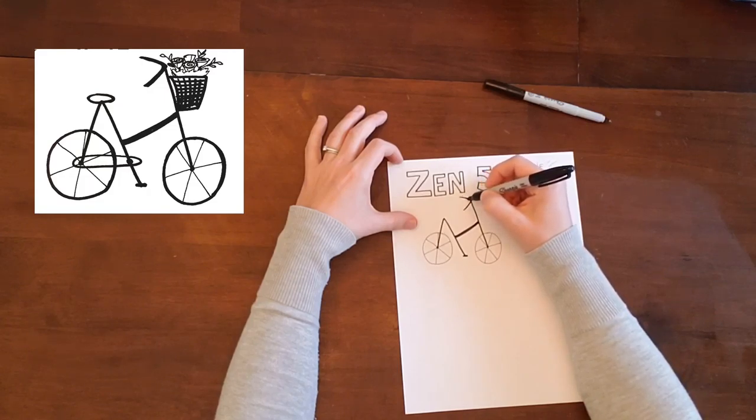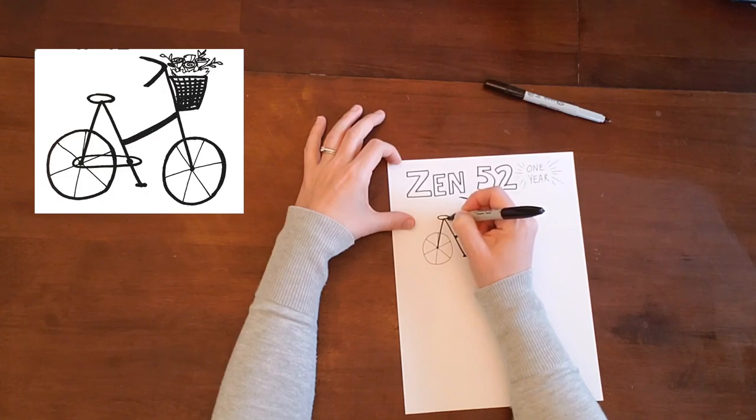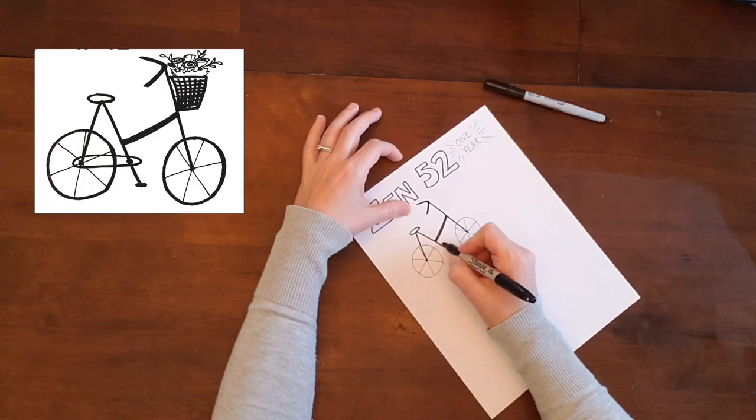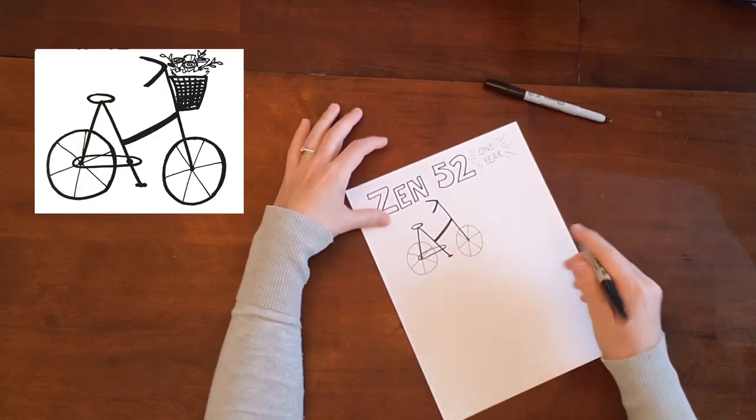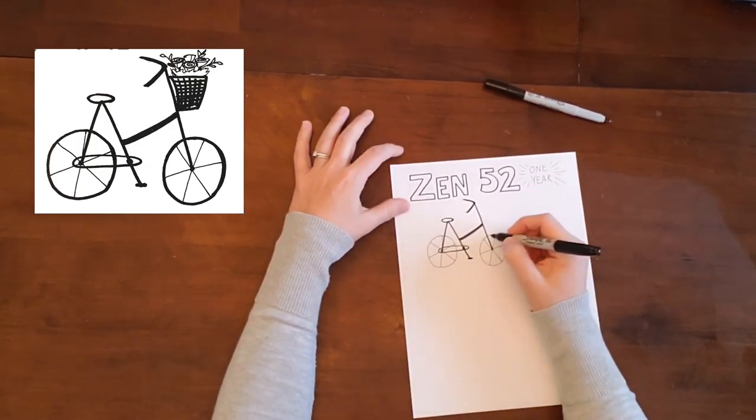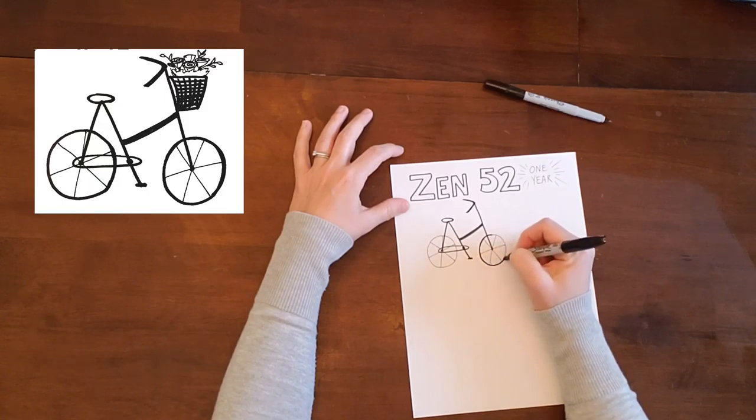We'll put some handlebars on here, kind of an open V or boomerang shape. You can get way more detailed than this if you'd like. I'm going to put the chain on here now, so wrap it around the back axle and it crosses over the front. I like to put a little dot there.